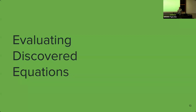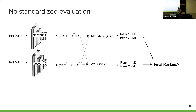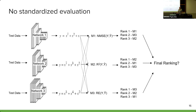The next thing we look at is the metrics — how you evaluate the equations discovered by the networks. To illustrate the problem that comes from having multiple metrics, we look at how an NSR method works: you have some test data, feed it into a network, it produces an equation, and you evaluate on some metric. When you only have a single method, this is straightforward. But as you add more methods, and each method in literature reports its own metric, it becomes harder to evaluate how well networks are doing compared to each other, making it hard to find a definitive ranking of which network is best.